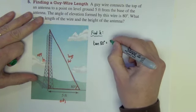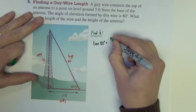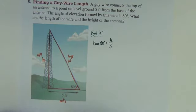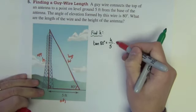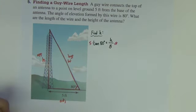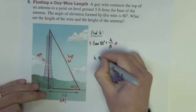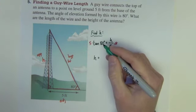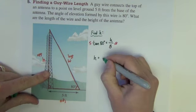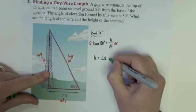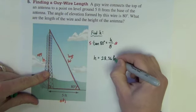Tangent of 80 degrees equals opposite H over adjacent five. We can solve this equation by multiplying both sides by five. So H is equal to five times the tangent of 80. Make sure your calculator is in degree mode. So we get 28.36 feet.